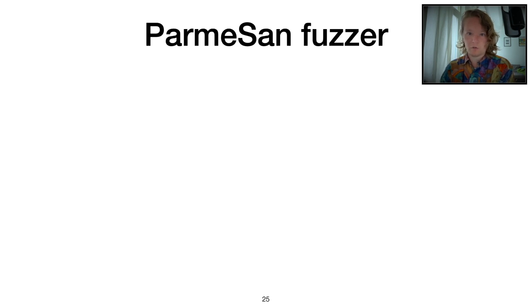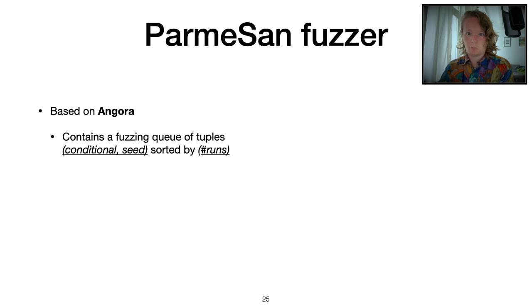The Parmesan fuzzer. Let's have a quick look at the implementation. We based our implementation on Angora, which is a coverage-based gray box fuzzer. Angora has a global queue for what it wants to fuzz, consisting of conditionals and the seed that was used to reach that condition.